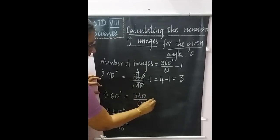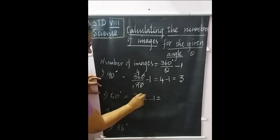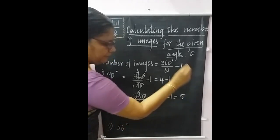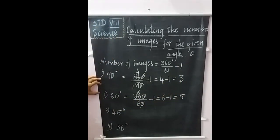For 60 degrees: 360 by 60 minus 1. 6 is 6, 6 times 6 are 36, isn't it? 6 minus 1, 5 images can be formed.